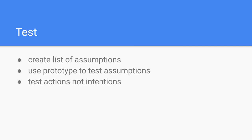Basically, you make a prototype to test your assumptions. When you pick your favorite idea, you thought it was the best idea — but why did you think that? Make a list of your arguments and you have the list of assumptions that you need to test. Use the prototype to test those assumptions.